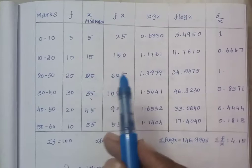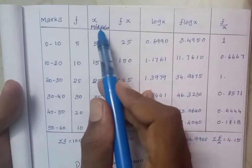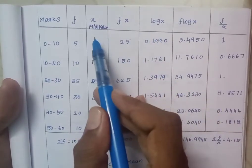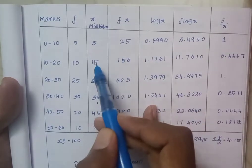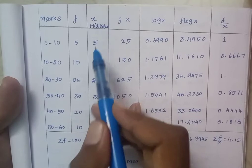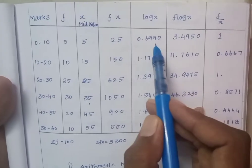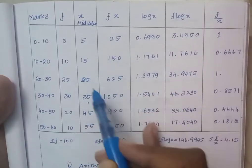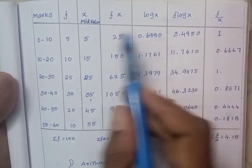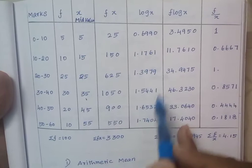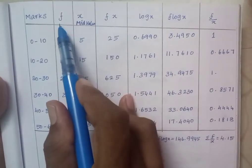Now we need to find f times x, log x, and f times log x. Taking log for the x values. For five, check page 278 for the log value. Log x means taking the log of the x value, like log 5.